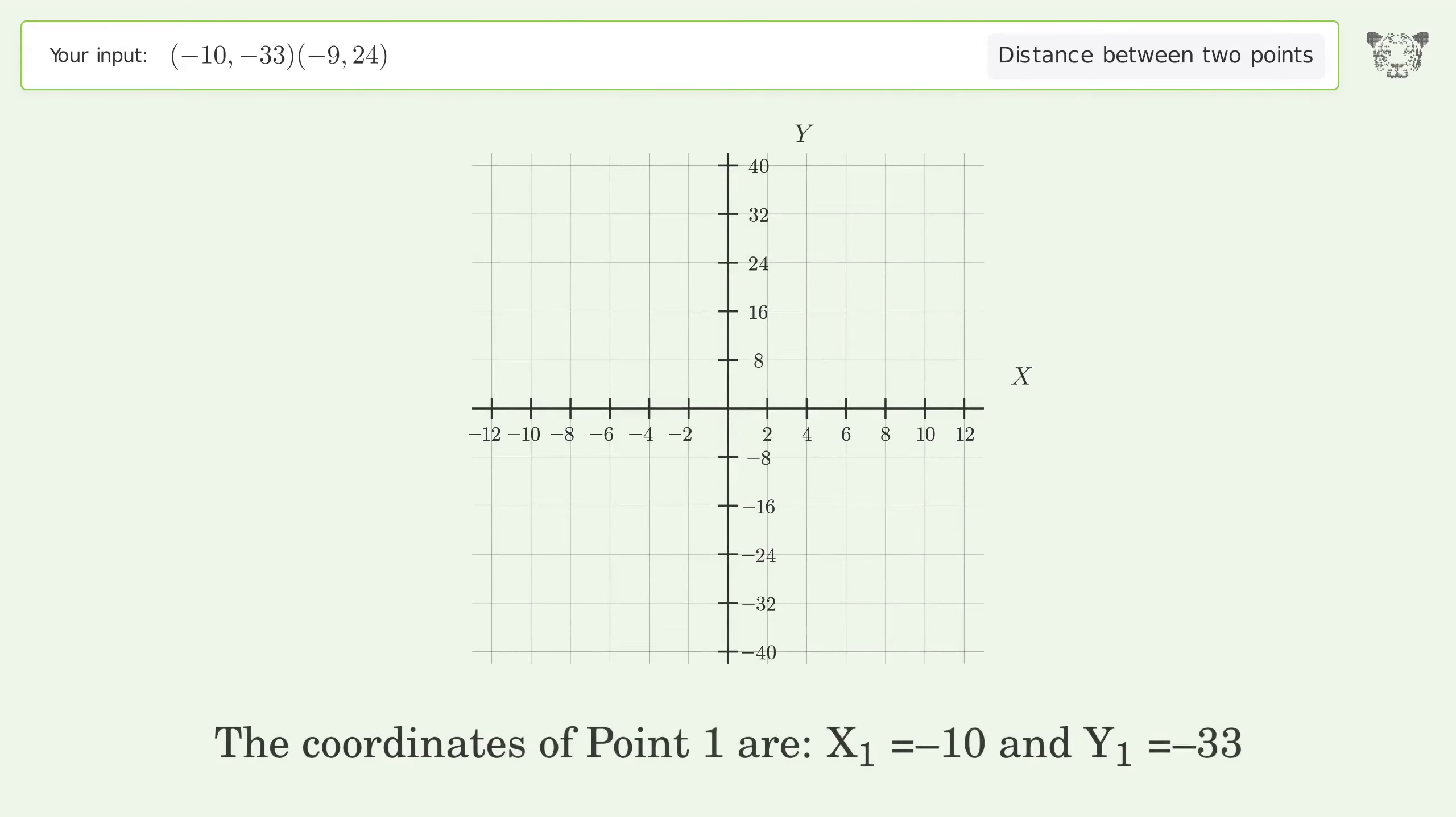The coordinates of point 1 are x1 equals negative 10 and y1 equals negative 33. The coordinates of point 2 are x2 equals negative 9 and y2 equals 24.